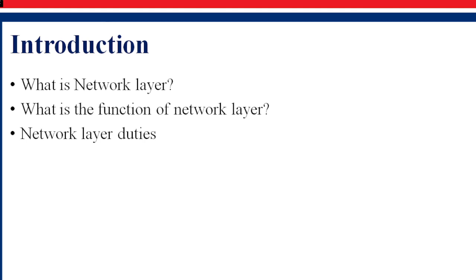What exactly is the network layer? If we look at the OSI model — Open System Interconnection model — the main function of the network layer, which is the third layer of the OSI model, is the delivery of data packets from the source to the destination across multiple hops or links. It also controls the operation of the subnet.